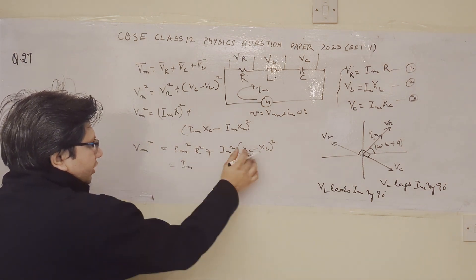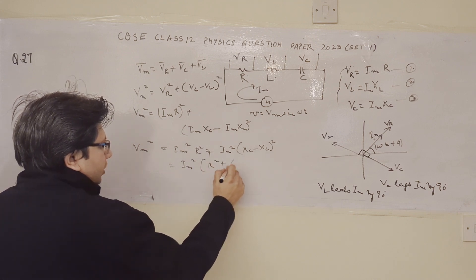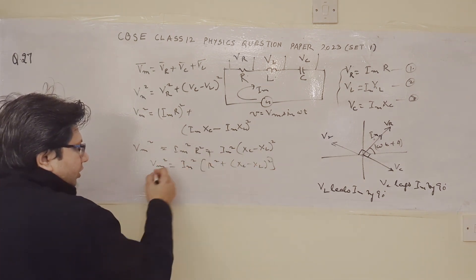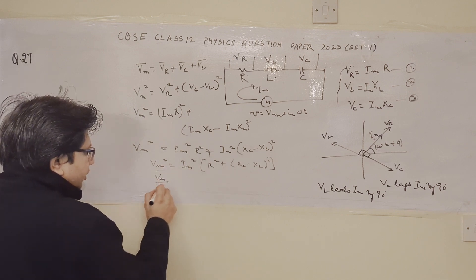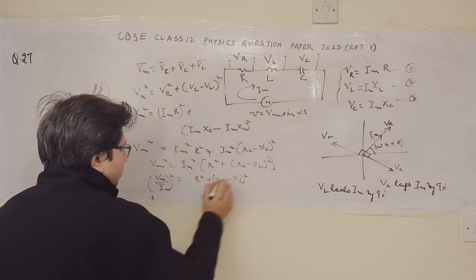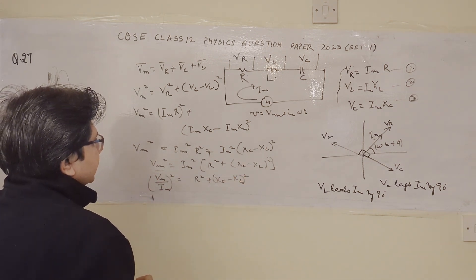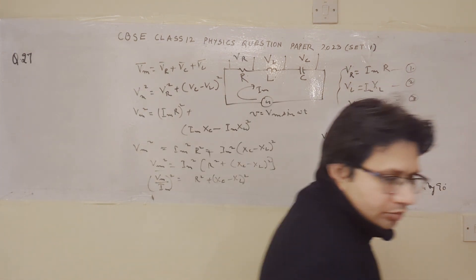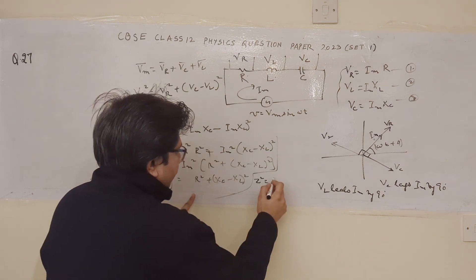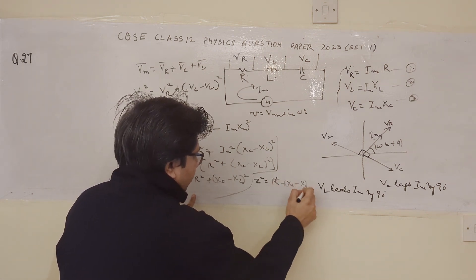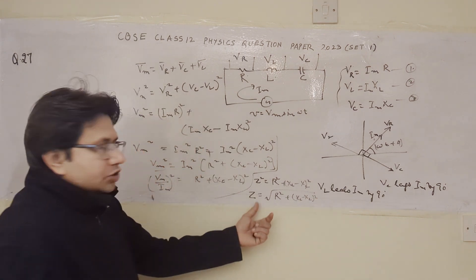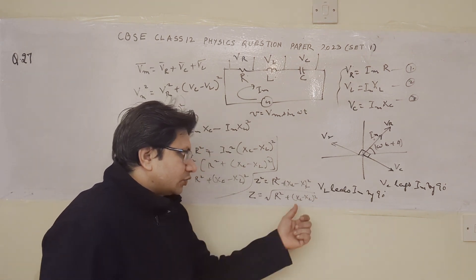Taking Im² as common: Vm² = Im²·[R² + (X_C − X_L)²]. Rearranging, (Vm/Im)² = R² + (X_C − X_L)². Now Vm/Im is nothing but the impedance Z. So Z² = R² + (X_C − X_L)², which gives us Z equals square root of R² + (X_C − X_L)² whole squared. This is the expression for the impedance of a series LCR circuit.